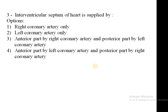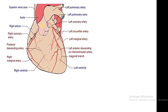Question three: the interventricular septum of the heart is supplied by — to answer this you must know coronary circulation. There are two coronary arteries: the right and the left. The right coronary artery arises between the root of the pulmonary trunk and the right auricle, descends anteriorly in the coronary sulcus (atrioventricular groove), reaches the junction of the right and inferior borders of the heart, then turns back into the posterior coronary sulcus and anastomoses with the left coronary artery.